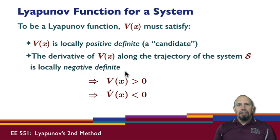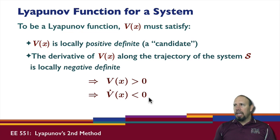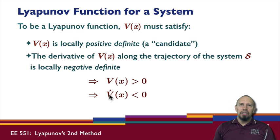A negative definite function is one whose negative is a positive definite function — they're opposites. So v of x needs to be positive definite and v-dot of x needs to be negative definite. If v satisfies both properties, it is called a Lyapunov function. If it satisfies only the first property, it's a candidate Lyapunov function. If it satisfies both, it is an actual Lyapunov function.